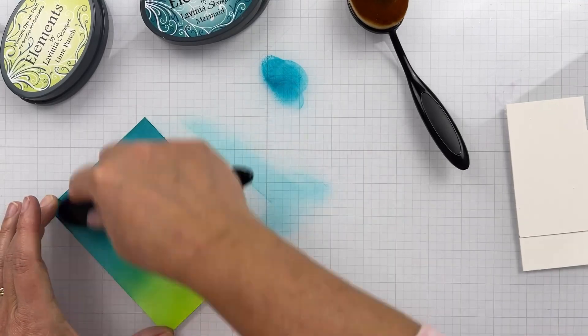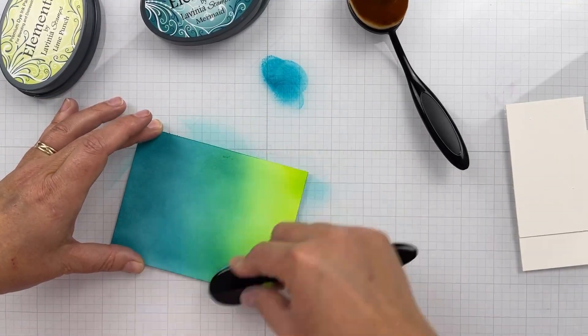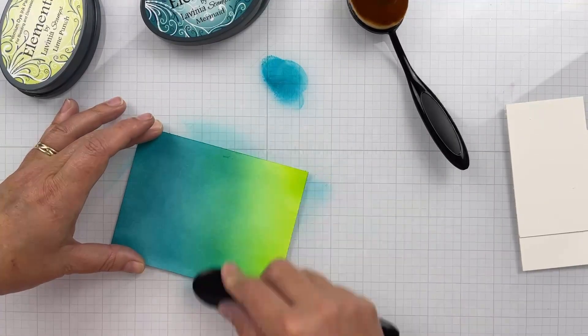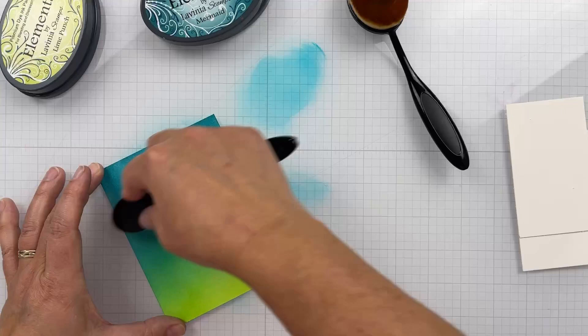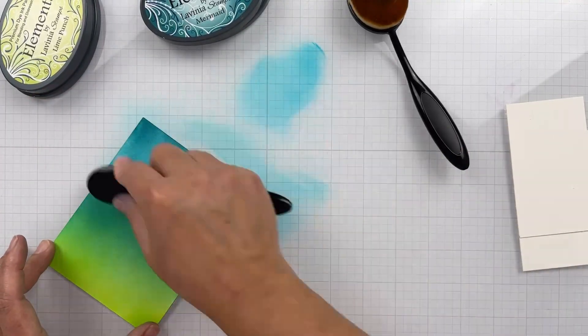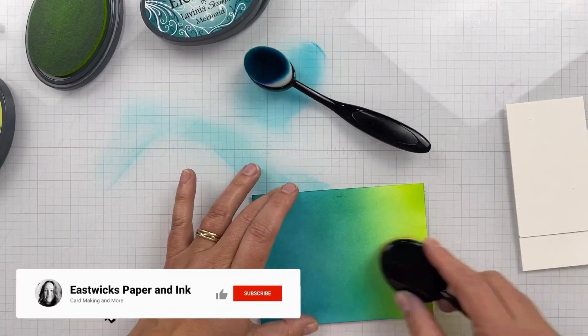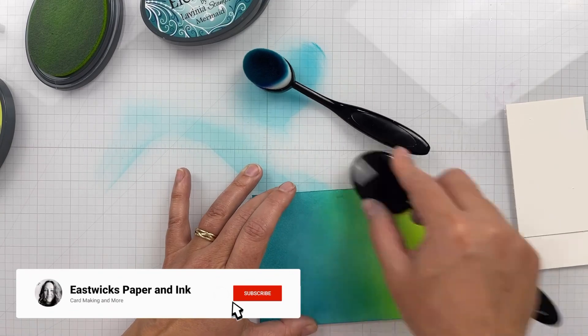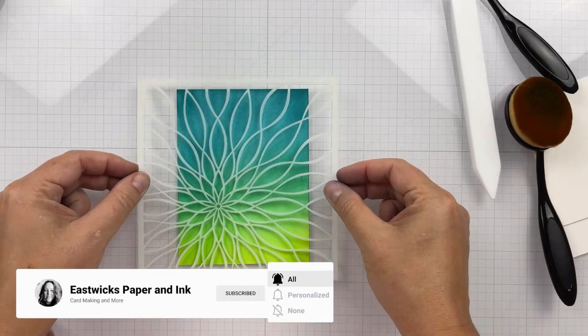If you don't have Distress Inks, you could do VersaFine Clair in Verdant, Warm Breeze, and Twilight. I'm going to use Dark Denim for my dark blue in the Elements line, but the Twilight or Chipped Sapphire will work as a dupe for your Dark Denim.